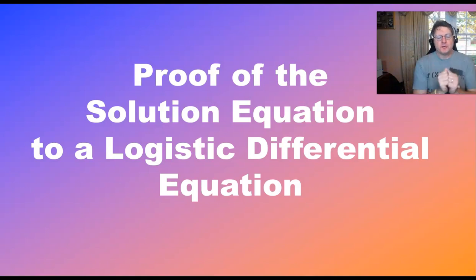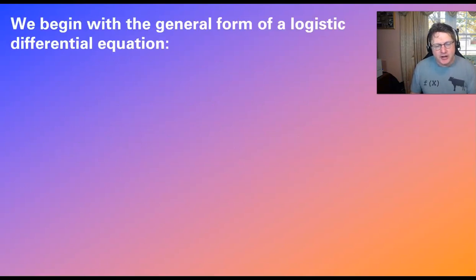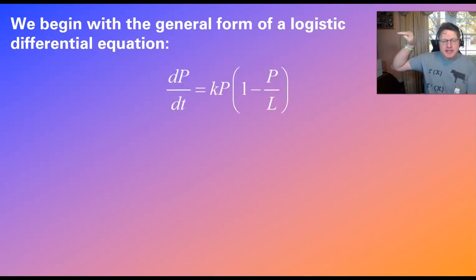So welcome to our proof of the solution equation to a logistic differential equation. If I go too fast through this particular proof, don't worry. You can always pause the video or rewind. So we're going to start off with our general form of the logistic differential equation: dP/dt equals kP(1 minus P over L). Now, the one thing that I am changing here is I changed my dependent variable from Y to P. I thought it might make a little bit more sense. Maybe P stands for a population of sorts. L is still going to be that carrying capacity.